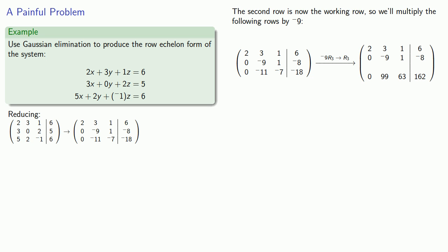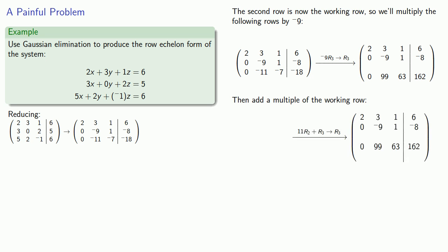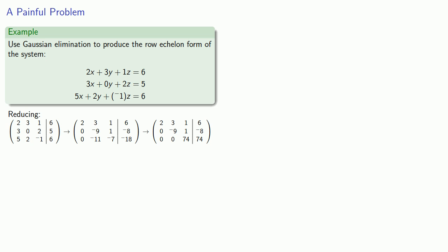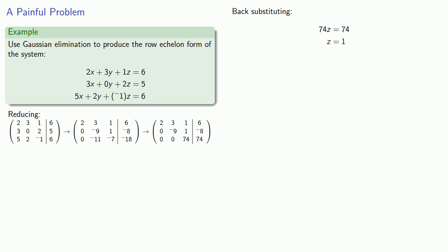Then we can add a multiple of the working row to get zeros below the pivot of the working row. In this case, if we multiply the working row by 11, we get 0, negative 99, 11, negative 88. And adding that to the third row gives us 0, 0, 74, 74. This gives us a new third row, which along with our first and second rows gives us our augmented coefficient matrix in row echelon form. Now that the matrix is in row echelon form, we can use back substitution to solve for all the variables. So the last row corresponds to the equation 74z equals 74, which we solve: z equals 1.